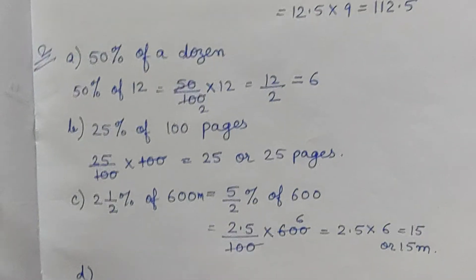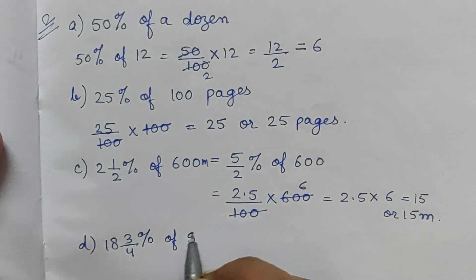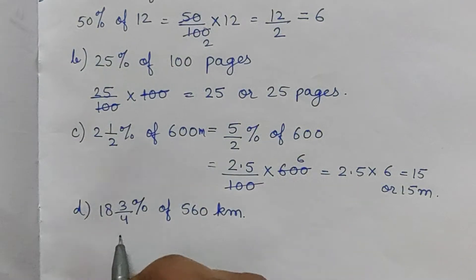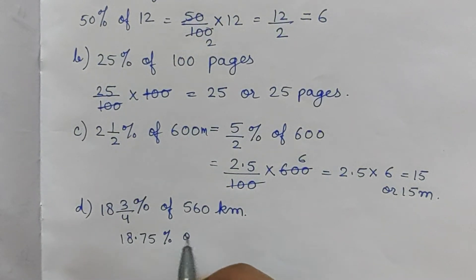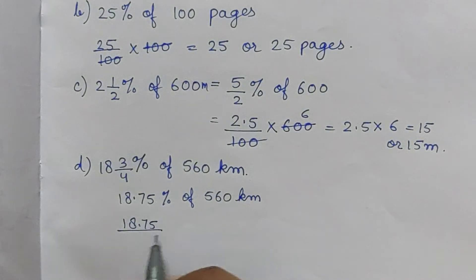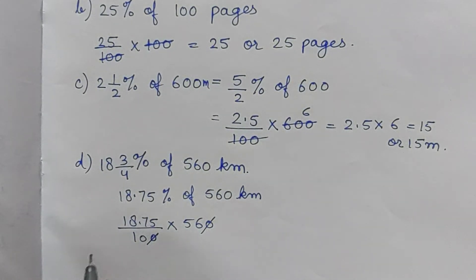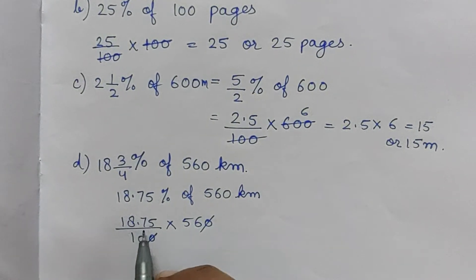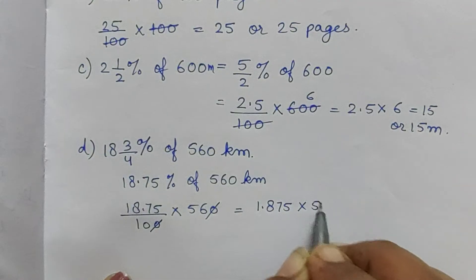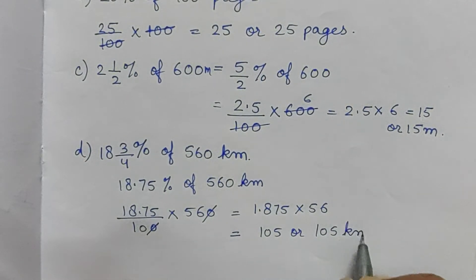Part d: 18 and 3/4 percent of 560 kilometers. 18 and 3/4 is 18.75 percent of 560 kilometers. 18.75 by 100 into 560. Canceling zeros, 1.875 into 56 equals 105 kilometers.